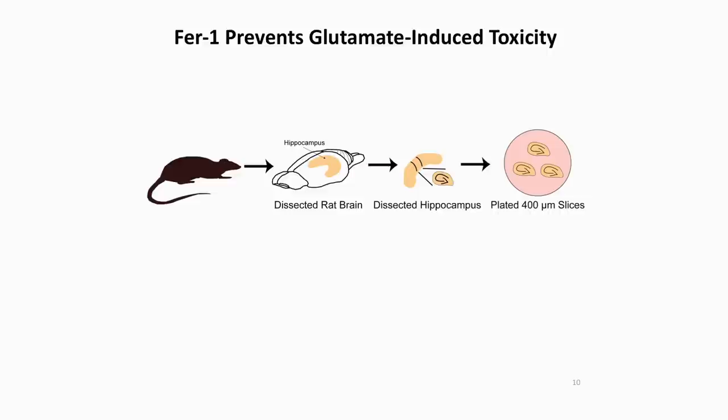With Ferrostatin-1 in hand, we could ask whether there's any relationship between Erastin-induced death in cancer cells and forms of oxidative iron-dependent cell death that have been described in the nervous system. We collaborated with Barclay Morrison and Michael Amprich here at Columbia University to look at glutamate-treated slices from the rat hippocampal cortex. Glutamate mimics an excitotoxic stimulus seen in many neurodegenerative diseases as well as in stroke, and we found that Ferrostatin-1 was quite a potent inhibitor of glutamate-induced death, suggesting that Erastin-induced death in cancer cells and glutamate-induced death in brain slices might share an underlying similarity at the molecular level.